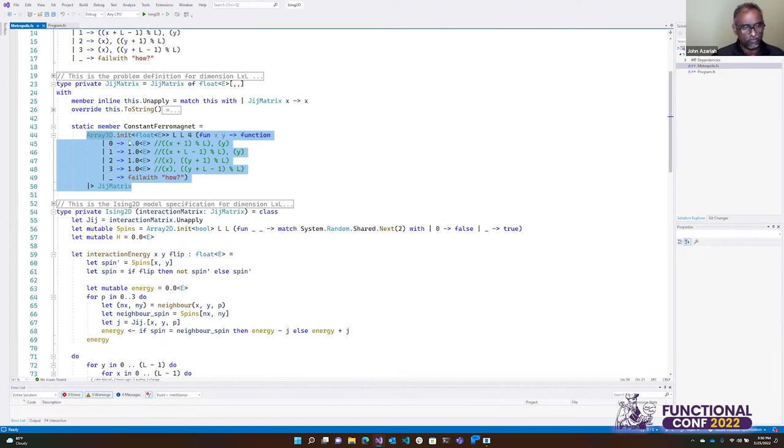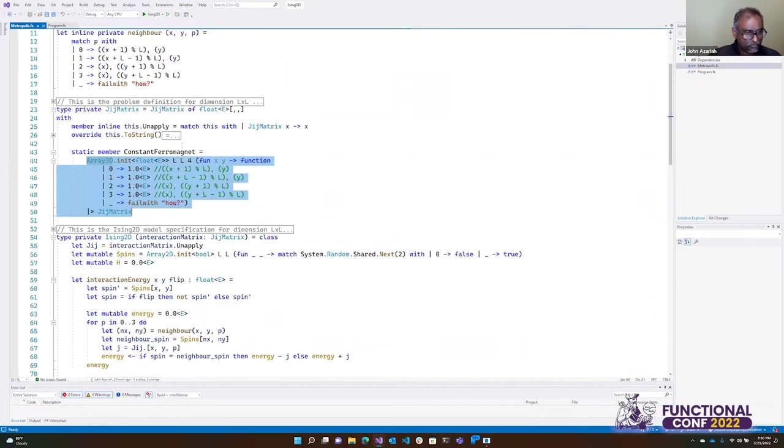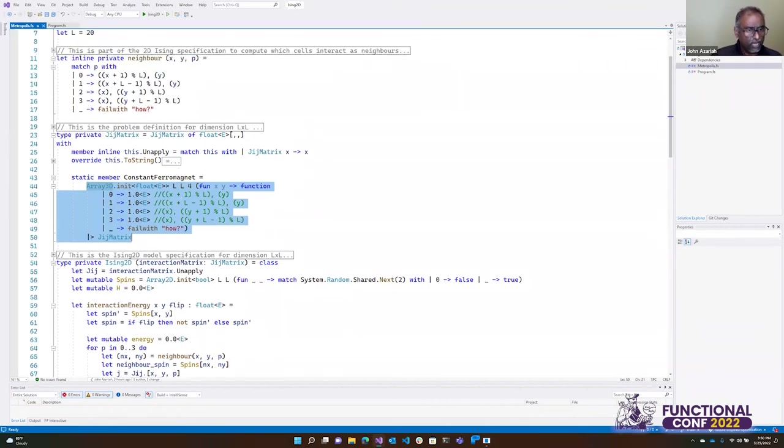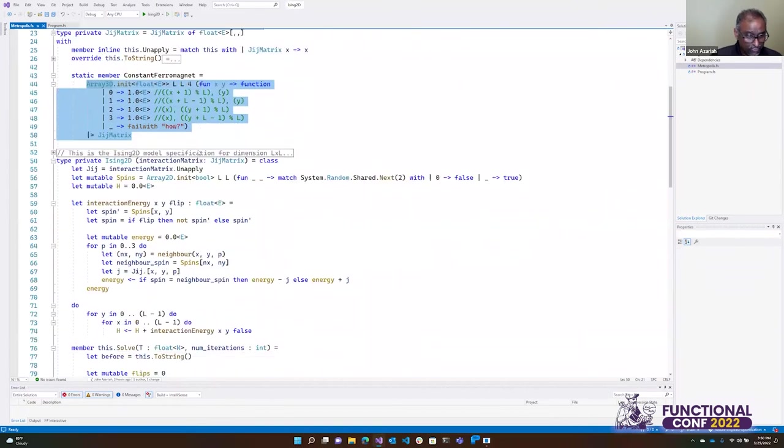We represent that by saying that the coordinate, the difference, I mean, the coefficient between the two nodes in this graph or in this lattice basically is one when I'm a neighbor and zero when I'm not. And this is in effect the statement of the problem.